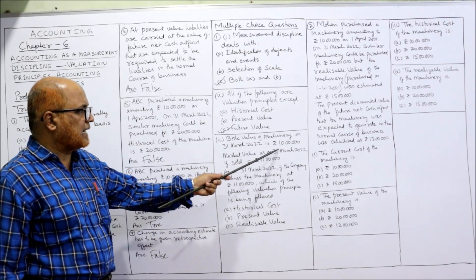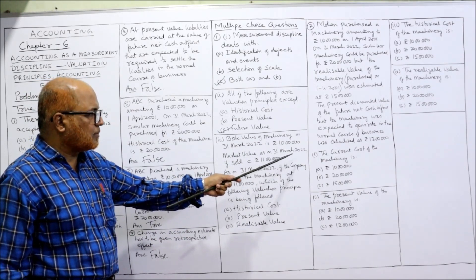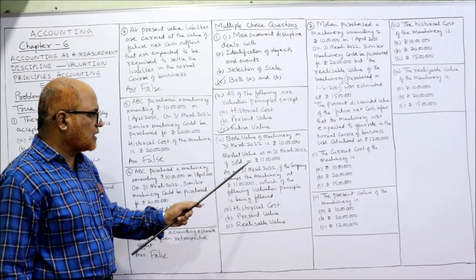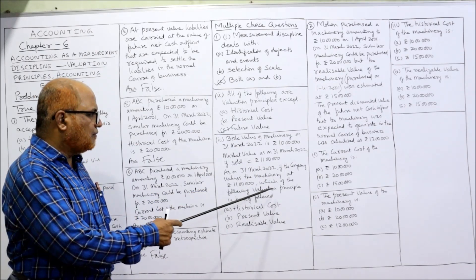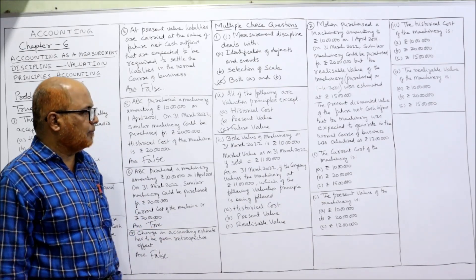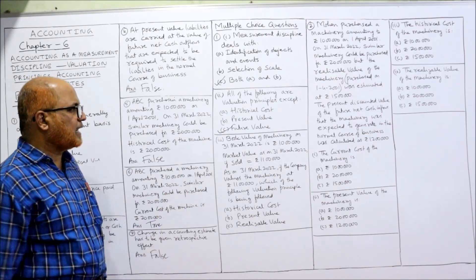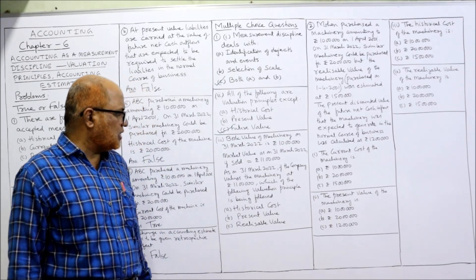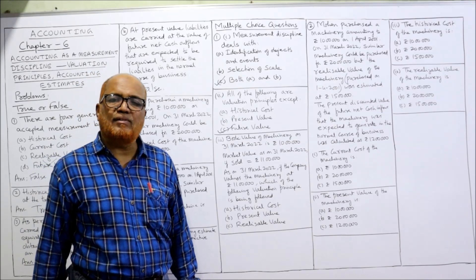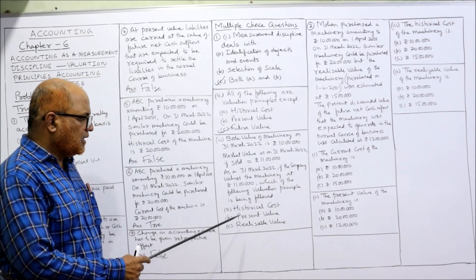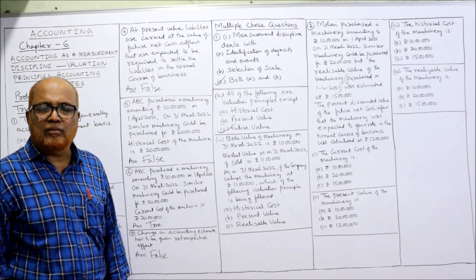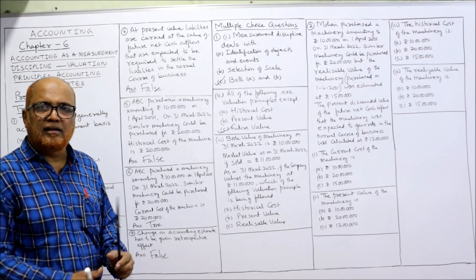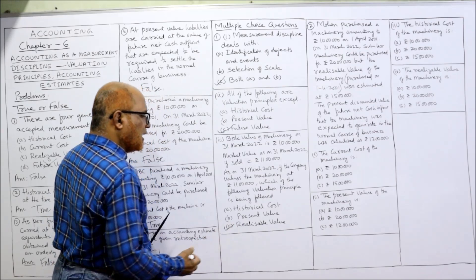Next: the book value of machinery on 31st March 2022 is Rs. 10 lakh; the market value as on 31st March 2022 if sold is Rs. 11 lakh. If the company values the machinery at Rs. 11 lakh, which valuation principle is being followed? The book value is Rs. 10 lakh, but the market value if sold is Rs. 11 lakh. This Rs. 11 lakh is the realizable value — the amount that could be obtained by selling the machine. So the answer is realizable value.